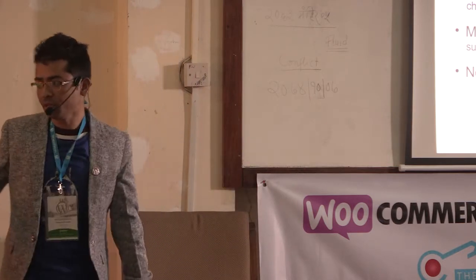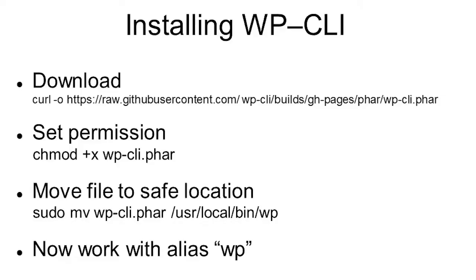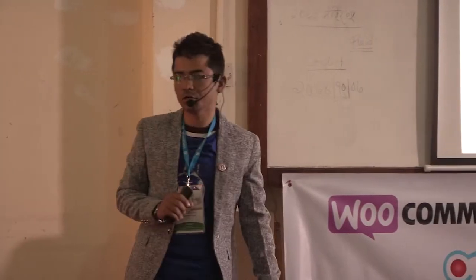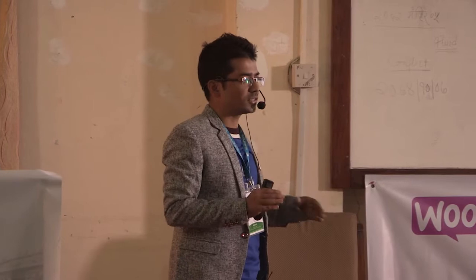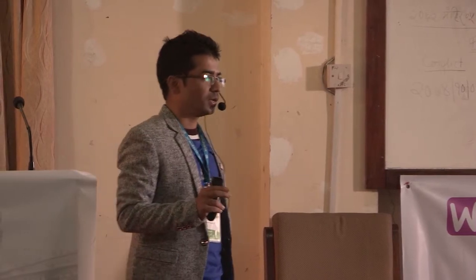First, you hit the command shown on screen and the WP-CLI .phar file will be downloaded to your machine. Then you give it permission to execute — that's the second step. Third, you move that file to a safe location so it doesn't get accidentally deleted. The fourth step is WP — the key package that every command will be prefixed with, like WP install, WP activate — making commands easy to remember.